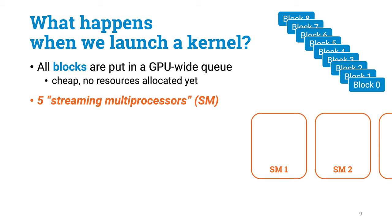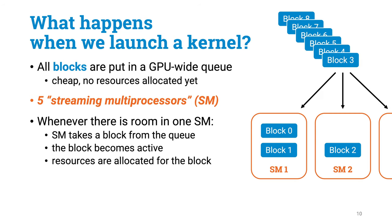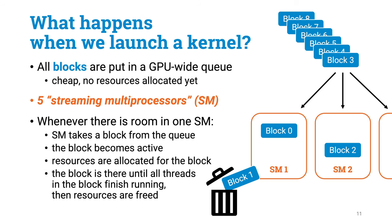Inside our GPU there are 5 streaming multiprocessors, or SMs. Whenever an SM has some resources available, it will take one block from the queue — one SM can take multiple blocks if there is room. The SM allocates resources for the block, executes it, and once all threads in the block have completed their work, the block is thrown away. Blocks don't need to finish in the same order as they start, their execution may be interleaved and parallelized in an arbitrary manner. Most importantly, SMs work completely independently, which is why the entire block has to go to one SM — you can only have communication between threads inside an SM.